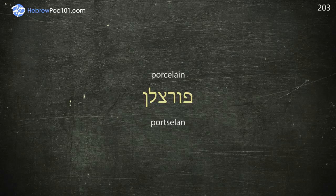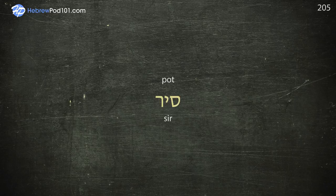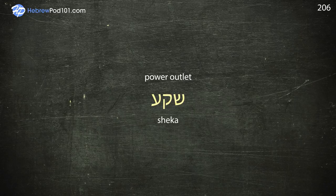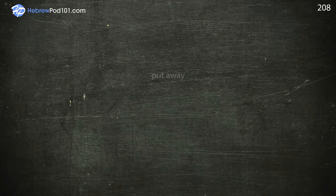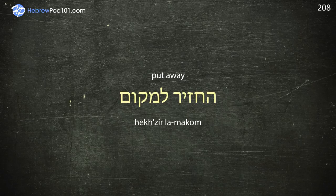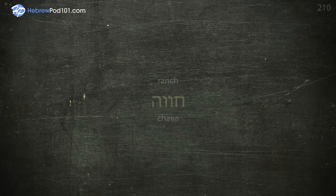Portrait. Pot. Power outlet. Pressure cooker. Put away. Radio. Ranch — Chava.